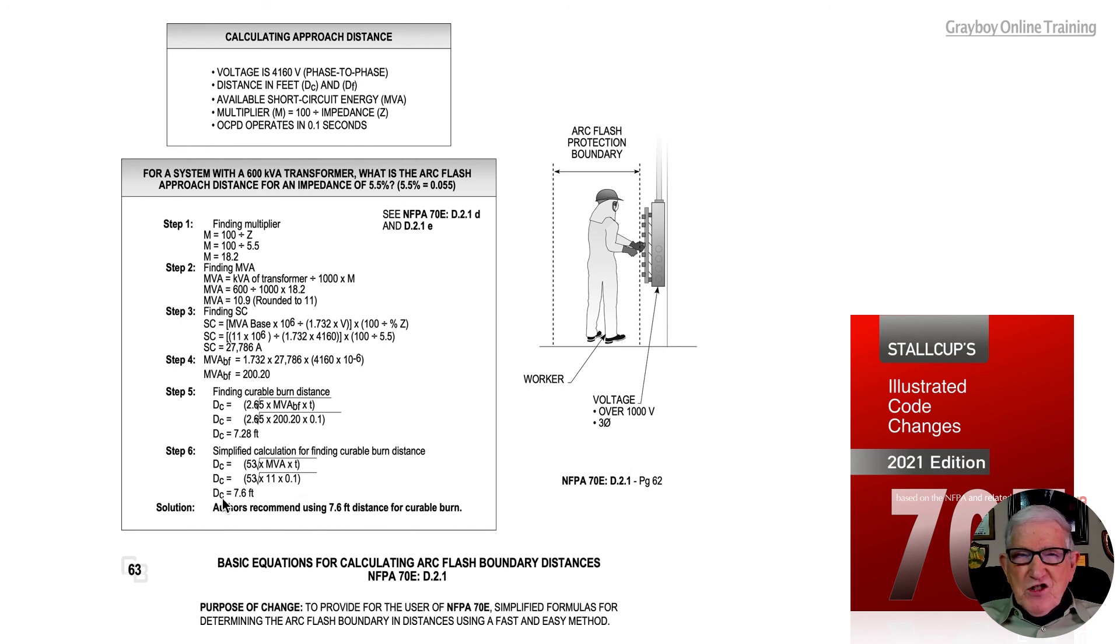This gives us Dc of 7.6 feet. If we took a bolted fault as in step five, after doing the more complicated math it would be 7.28. So 7.6 gives a good estimate of the distance for a curable burn, which would be no more than a second degree burn.